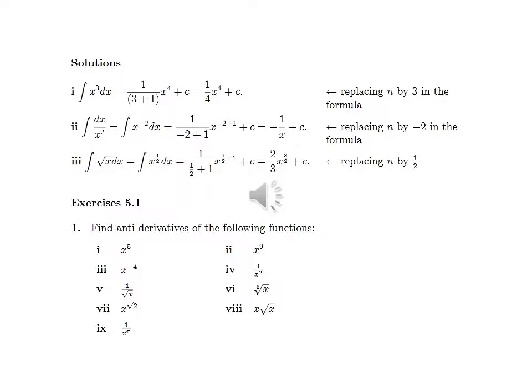Exercise 5.1: Find the anti-derivative of the following functions. Remember that anti-derivative equals integration — this is very important. The functions are: x to the power 5, x to the power 3, x minus 4, x to the power minus one-half, 1 over square root of x, the cube root of x, x to the power square root of 2, x multiplied by the square root of x, and 1 over x to the power n.